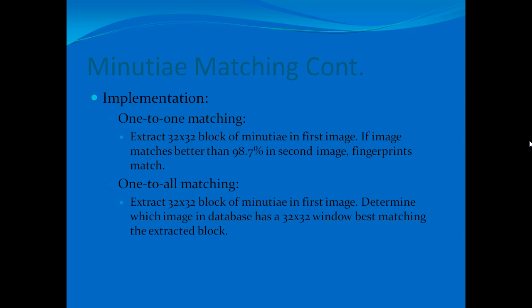The implementation used in this project was the sliding window application with a 32 by 32 block of minutiae. For one-to-one matching, a 32 by 32 block was extracted from the first image and slid through each possible location in the second image to determine if at any point there was better than a 98.7% match. If this threshold was exceeded, the fingerprints were said to match. For one-to-all matching, the same block was slid through each image in the database to determine which provided the best match.